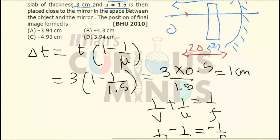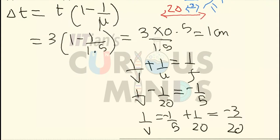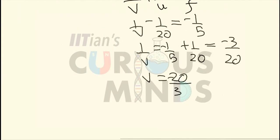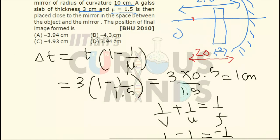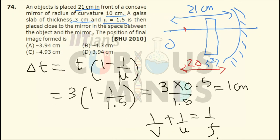Since it again has to pass through the glass slab there will again be a shift of 1 cm. So it will be equal to -20/3. The final position of the image will be equal to 20/3 + 1 which will be equal to 23/3 which will roughly be equal to 7 point something. If you see the answer is not available over here but the final answer will be 7 point something.